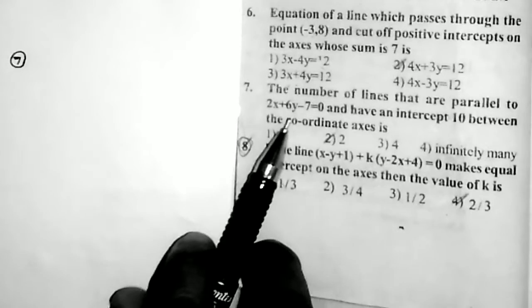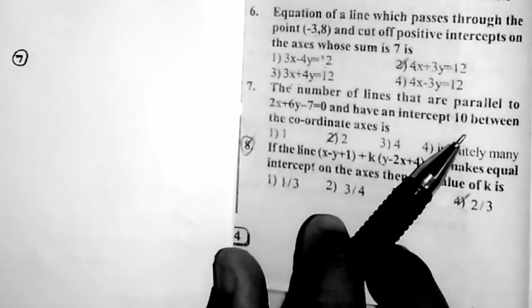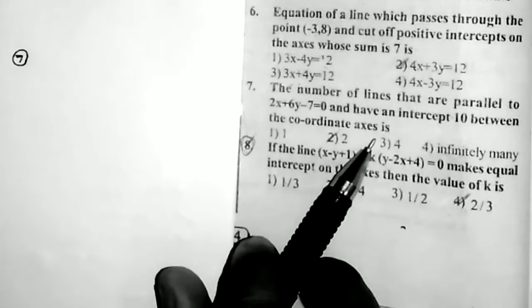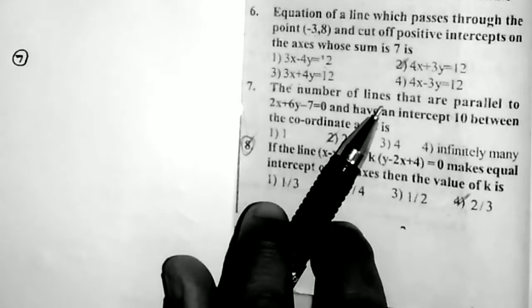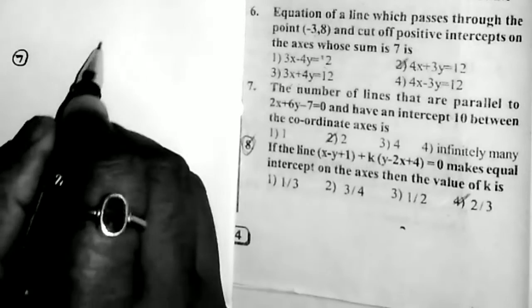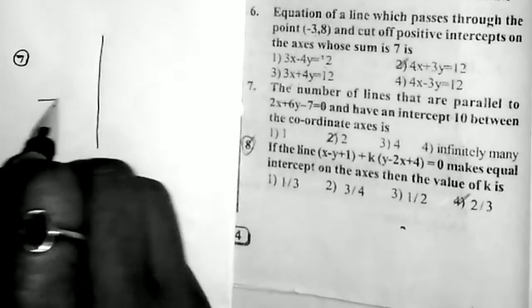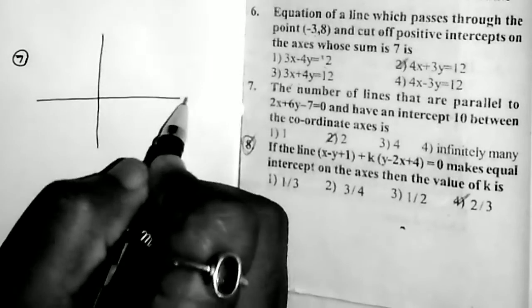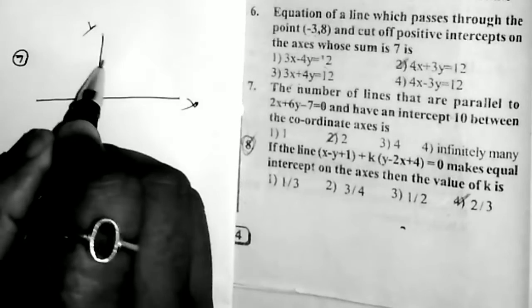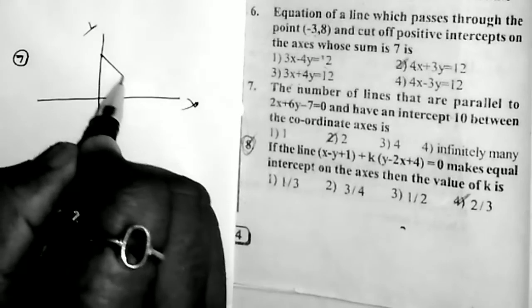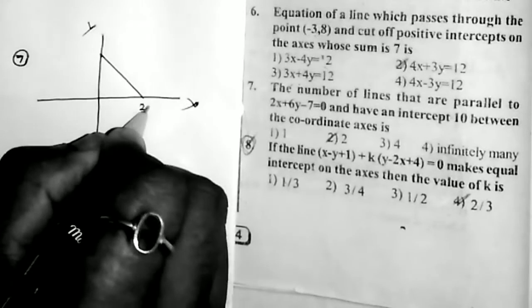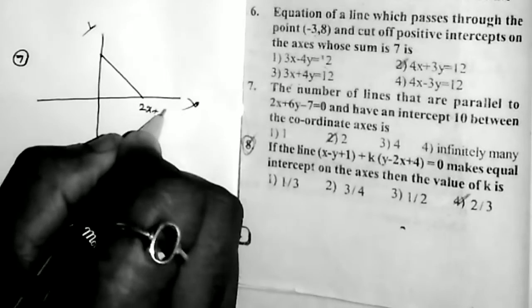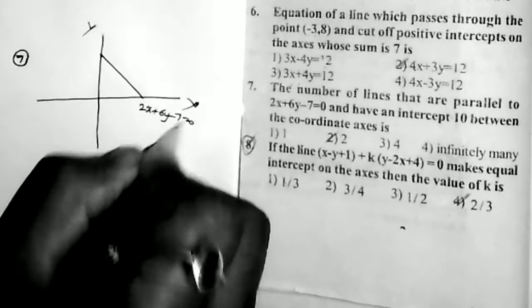Sum number 7: the number of lines that are parallel to 2x + 6y − 7 = 0 and having an intercept of 10 between the coordinate axes. Taking the coordinate axes, this is the given line 2x + 6y − 7 = 0.